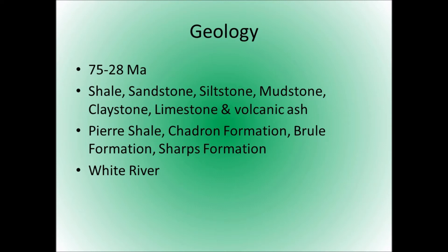The main rock formations you'll see in Badlands National Park are the Chadron Formation, the Brule Formation, and the Sharps Formation. Together, these are known as the White River formations, and that is where you're going to find most of the fossils.